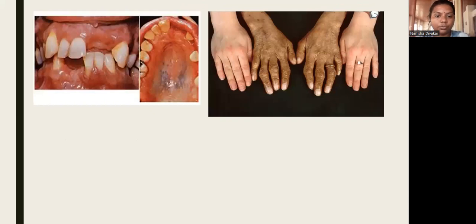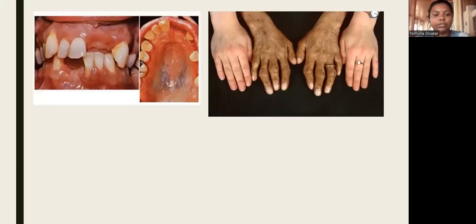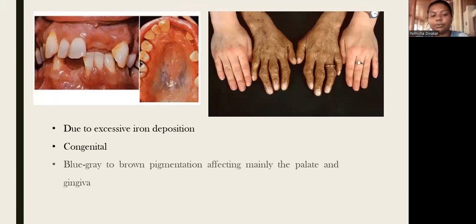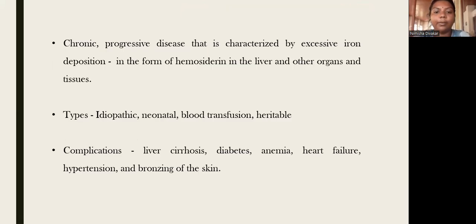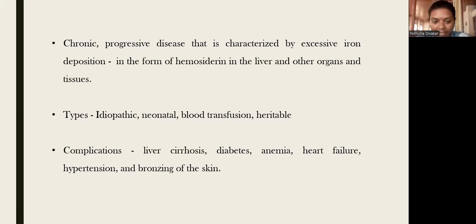Another endogenous pigmentation is hemochromatosis, which is due to excessive iron deposition and is congenital. It is a chronic progressive disease characterized by excessive iron deposition in the form of hemosiderin in the liver and other organ tissues. Types of hemochromatosis include idiopathic, neonatal, due to blood transfusion, and heritable forms. Complications include liver cirrhosis, diabetes, anemia, heart failure, hypertension, and bronze diabetes.